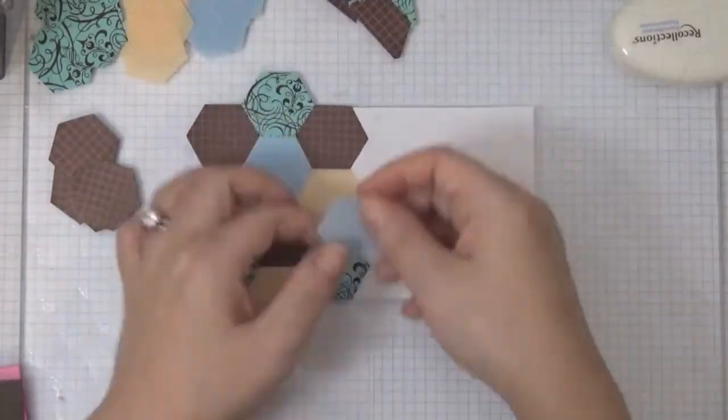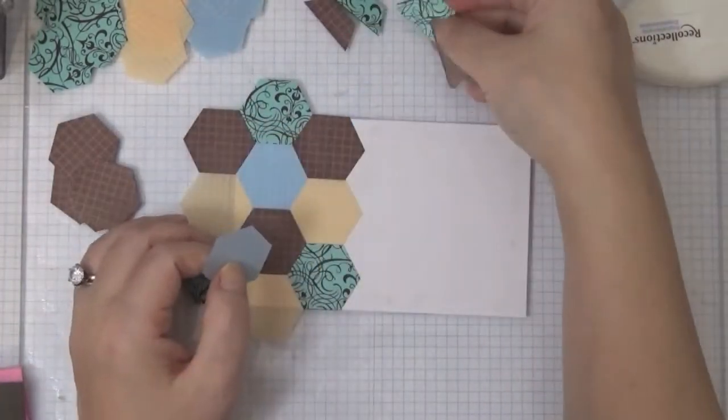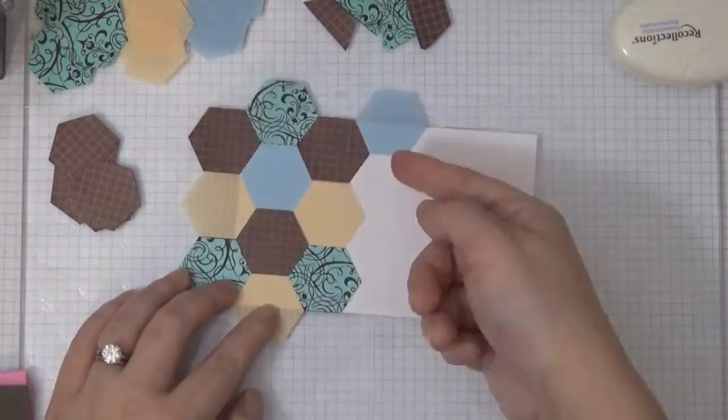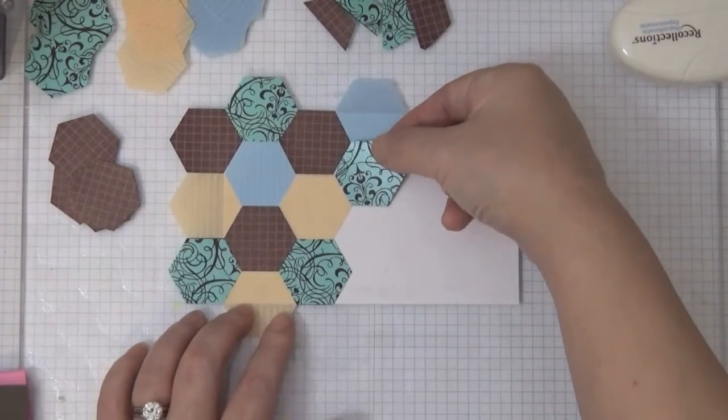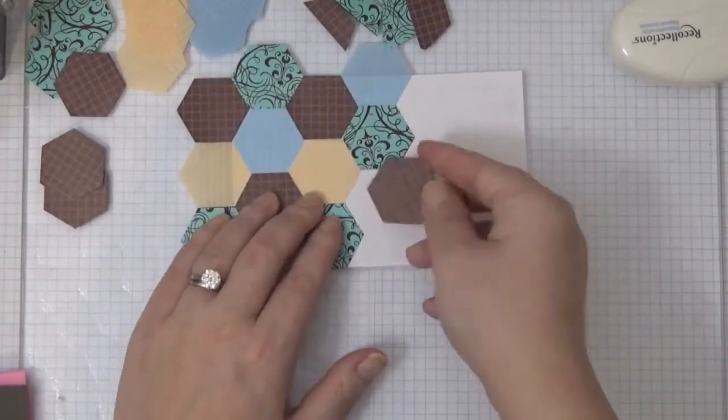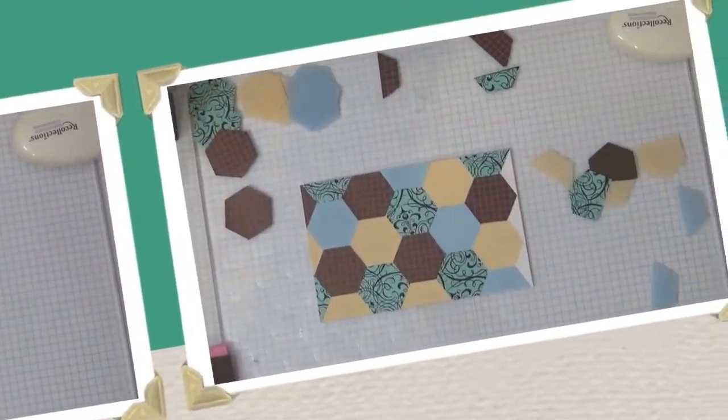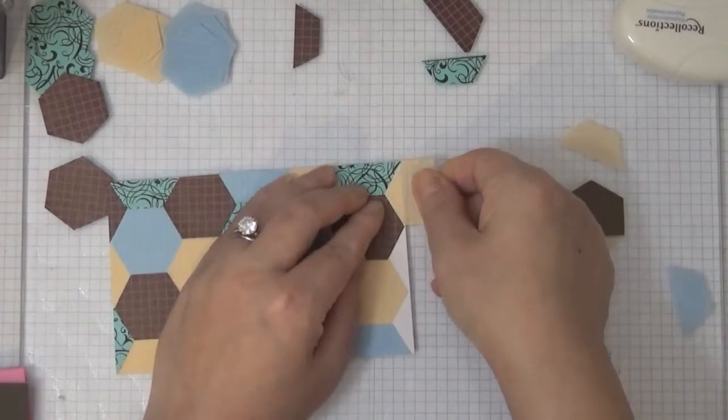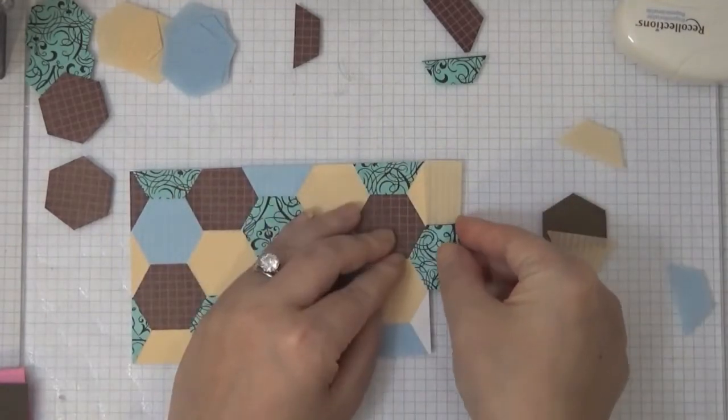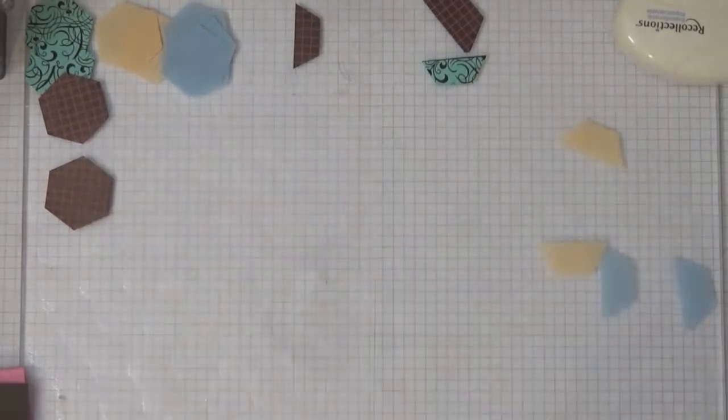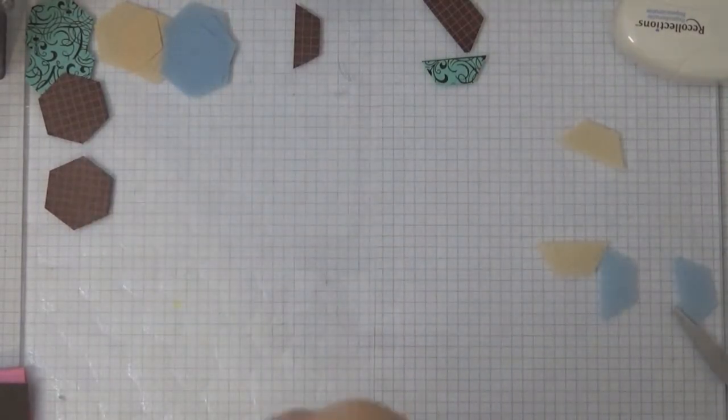I'm going to be creating like a pattern paper in a way using all these different papers. I'm just placing them in random order, I just don't want the same pattern right next to each other. Then I go off camera and finish the rest and I'm finishing up the last end. I cut off all the excess.